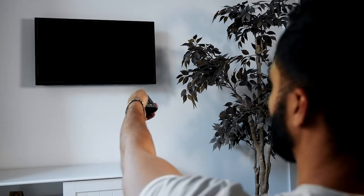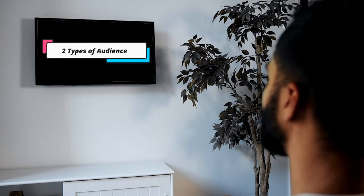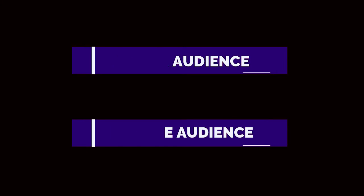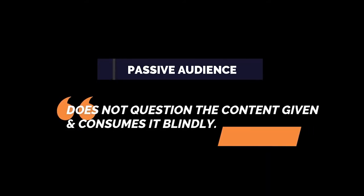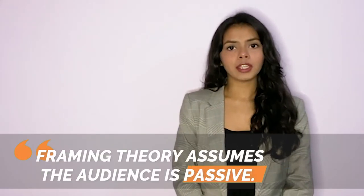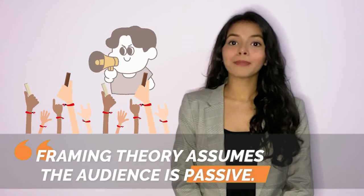Before going deeper into the theory, we must understand the consumers or the audience. There are considered to be two types of audience who consume media: the active and the passive audience. The active audience consumes media while questioning it at every turn and can demand the content that they want to watch. Whereas a passive audience consumes media as it is given, without questioning or doubting, consuming it blindly. The framing theory is constructed on the basis that the audience is passive.